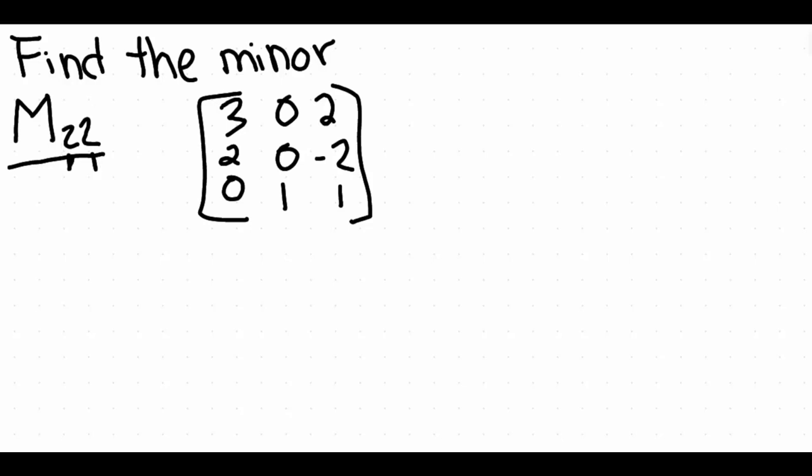Had it said maybe like two-three or something like that, then that would be row two, column three, and so on. Otherwise, let's go ahead and proceed with deleting the second row and second column. So I'm going to scratch out the second row, I'm going to scratch out the second column.